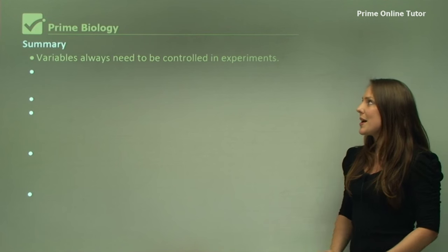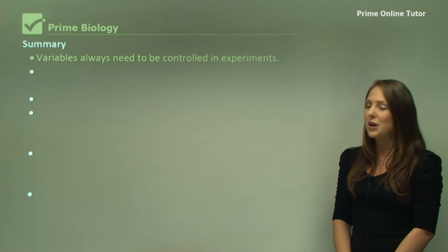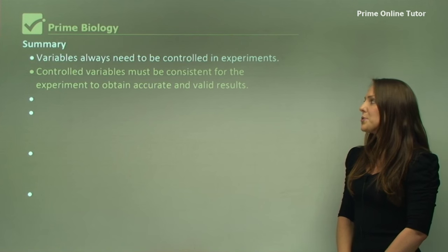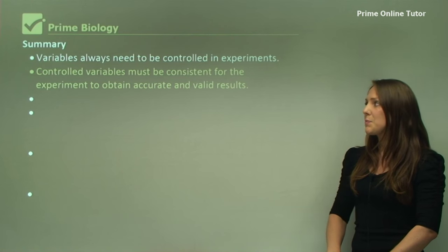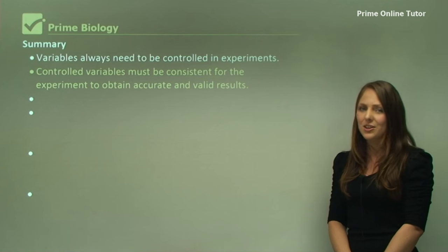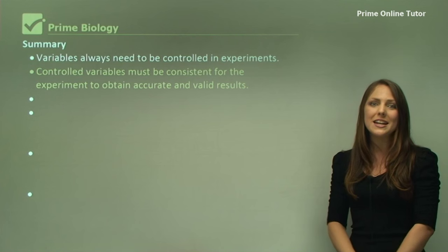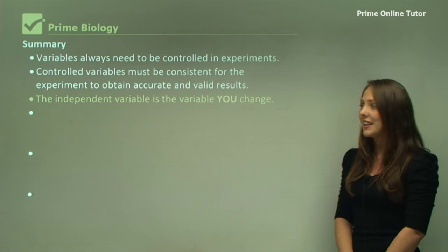A summary. Now variables always need to be controlled in experiments. Controlled variables must be consistent for the experiment to contain accurate and valid results. There can only be one independent variable. Otherwise, the experiment is invalid.